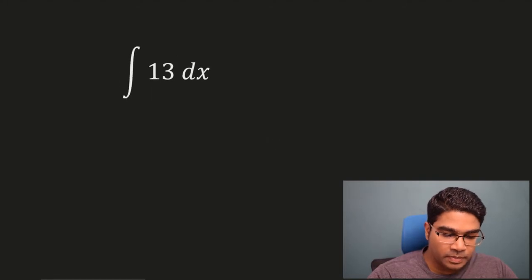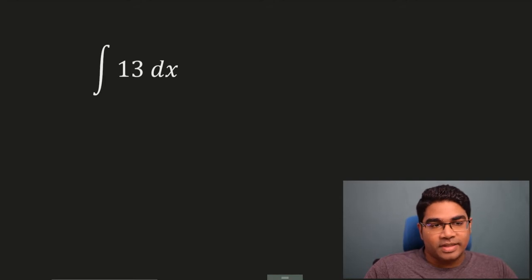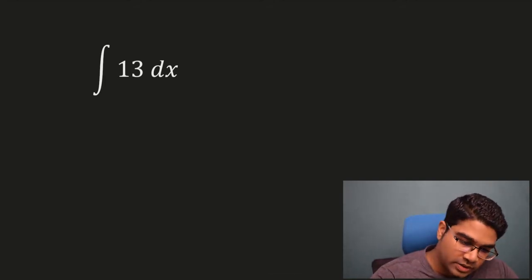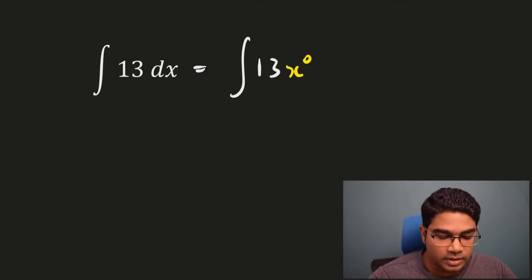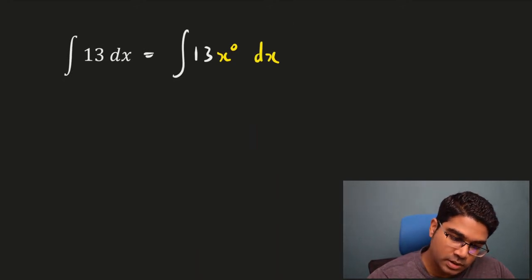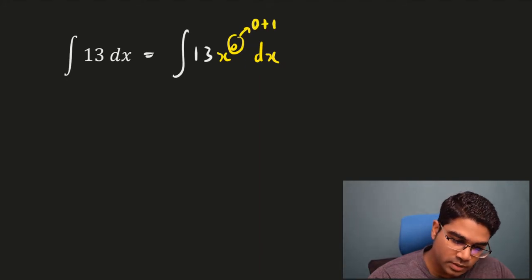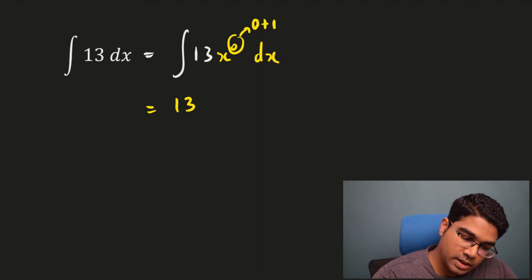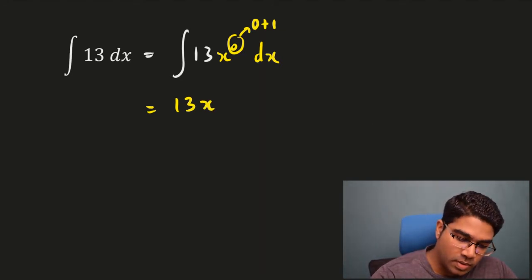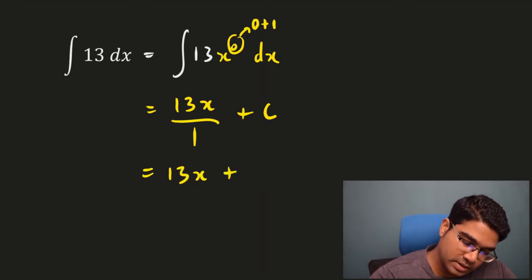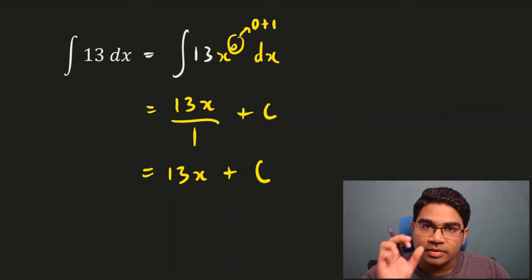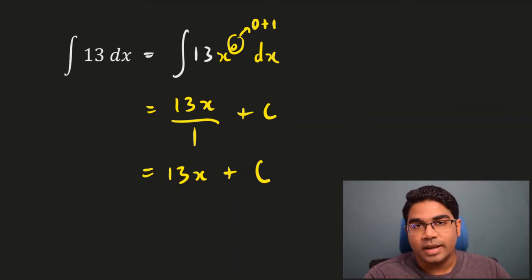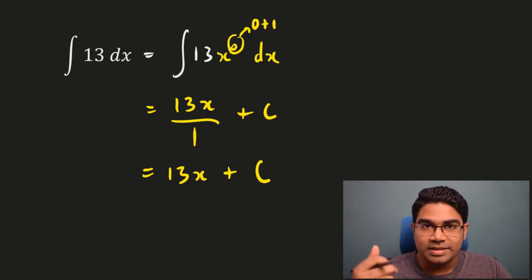Let's try another example. When we only have a number, you must remember that there is still an x there — x to the power of 0. So this is actually equals to the integration of 13 times x to the power of 0, because x to the power of 0 equals 1. So we have 13 times x to the power of 0 dx. We do the same thing: 0 plus 1 gives us 13x to the power of 1, which is 13x over 1, plus c. So this simply equals 13x plus c. Whenever you are integrating just a number with respect to a variable, all you have to do is add a multiple of the variable, and since this is an indefinite integral, plus c.